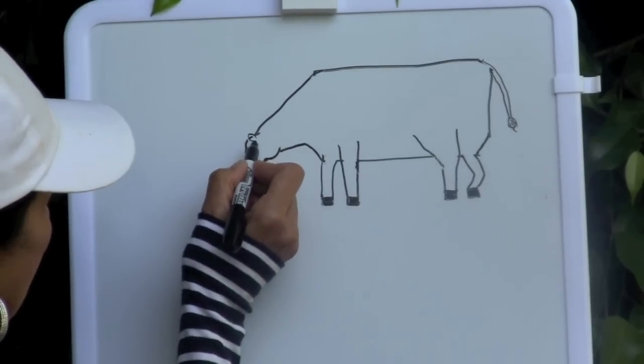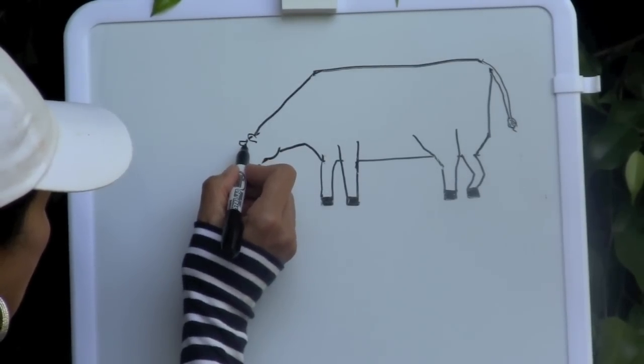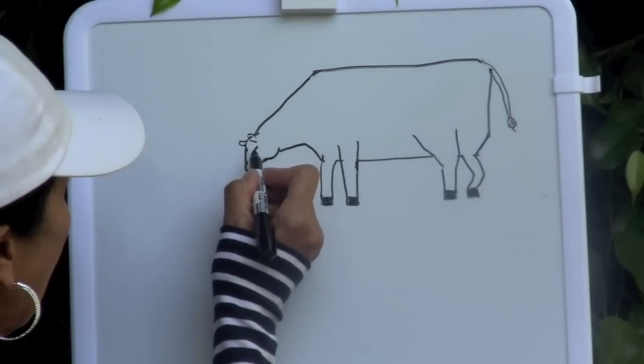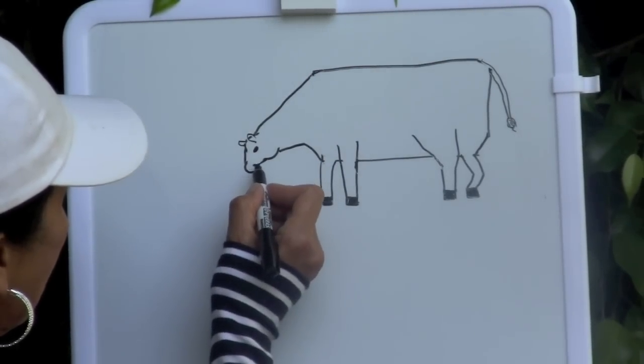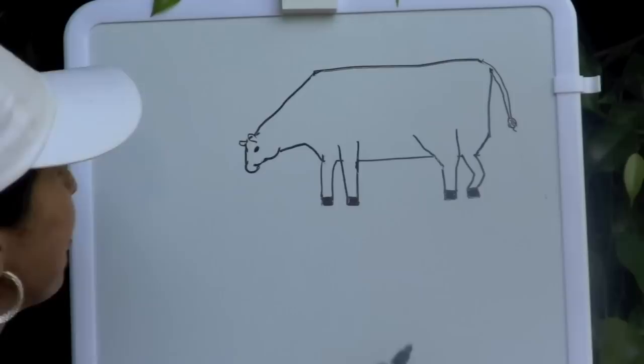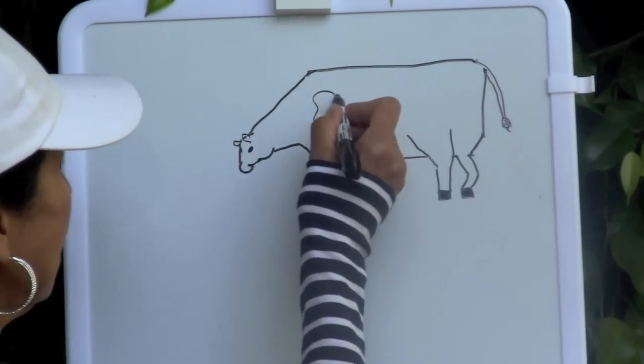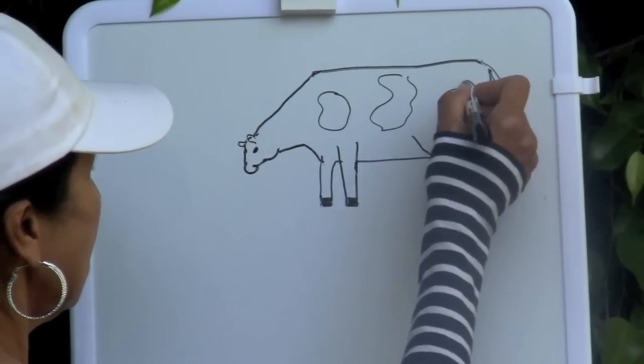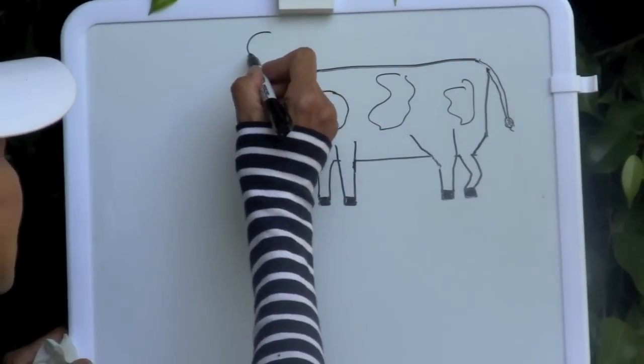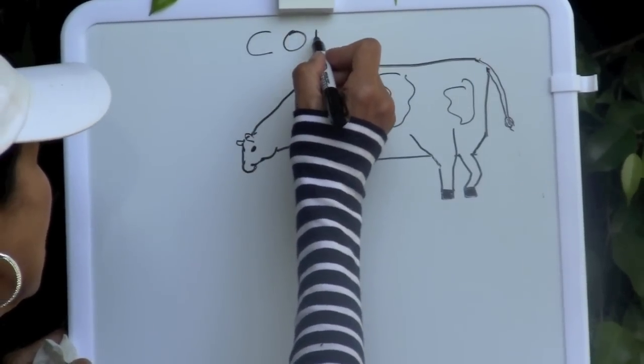Now on his head he has some oval shaped ears, so two ears for our cow, and a large eye there, the mouth. Then some patches, and that's going to be for those black patches on our white cow, this Holstein cow.